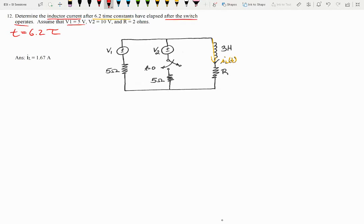And then they give us V1 values, V2 values, and this R value, where this R value is 2, and V1 is 5, V2 is 10.